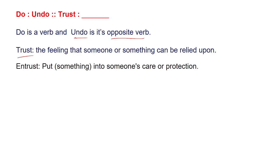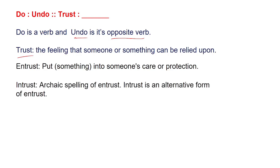Let's check the given options. The first option is 'entrust.' Its meaning is to put something into someone's care or protection, so this is not opposite in meaning to trust — it is a similar word to trust. The next option also has a similar meaning to trust and is not the right choice.